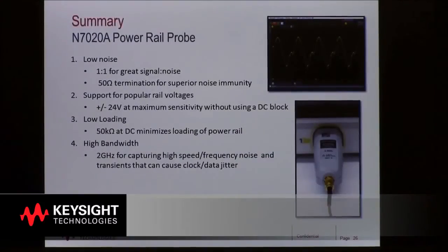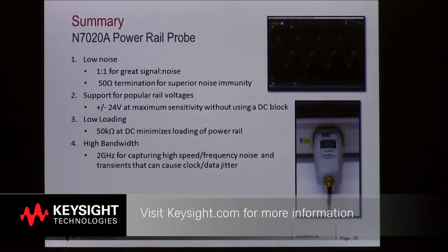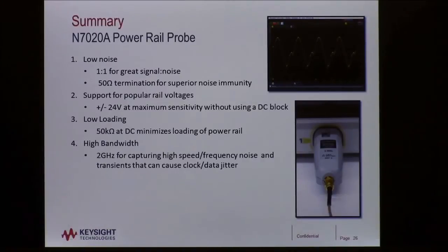So in closing let's go over what we discussed. Remember that users had four key things that they were looking for. First low noise. With the N7020A power rail probe we accomplish this by keeping the probe as a one-to-one attenuation probe so we've got good signal-to-noise ratio. In addition the scope is terminated in the 50 ohm input of the scope, which is the lower noise input to the scope.